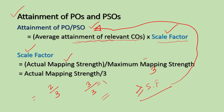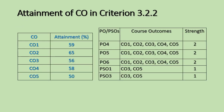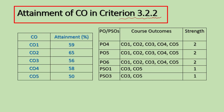The average attainment level of COs can be obtained from Criterion 3.2. We are currently discussing Criterion 3.3. In the previous Criterion 3.2, specifically in Criterion 3.2.2, we have already calculated the attainment levels, which are then multiplied by the scale factor.